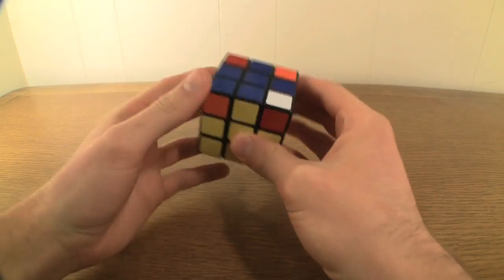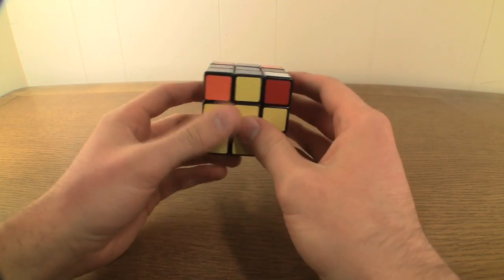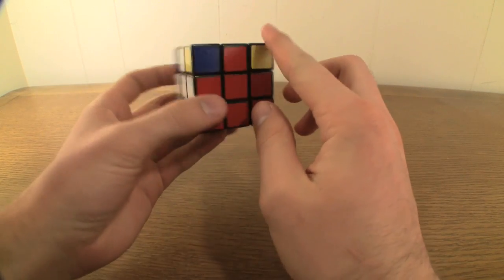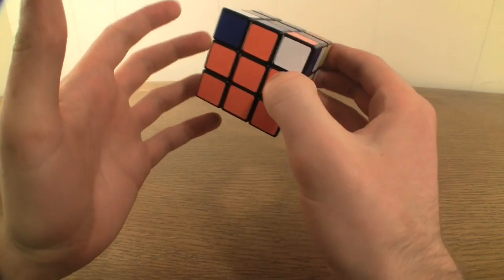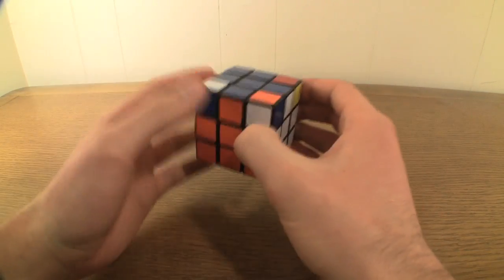Start by looking at each of the corner pieces to be solved and see how many are already in the correct location, but not necessarily oriented correctly. There will be either zero, one, or all four.